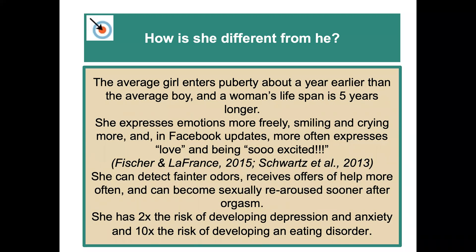What are some differences? The average girl enters puberty about a year earlier than the average boy, and a woman's lifespan is, on average, five years longer. Women also express more emotion — this all comes from research and follows along within the textbook.